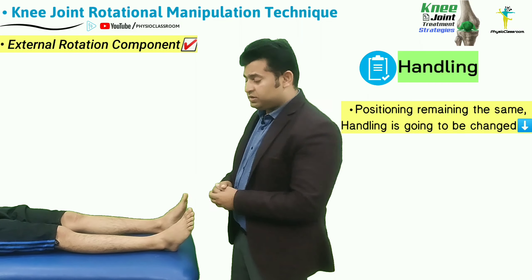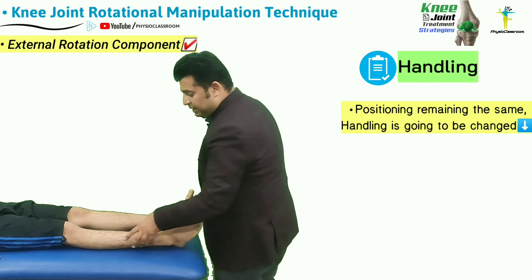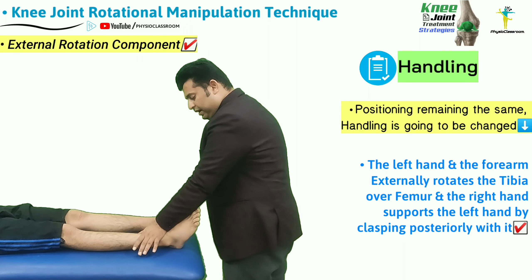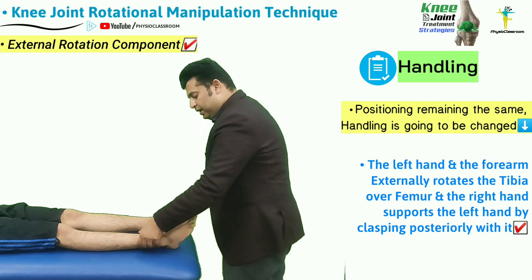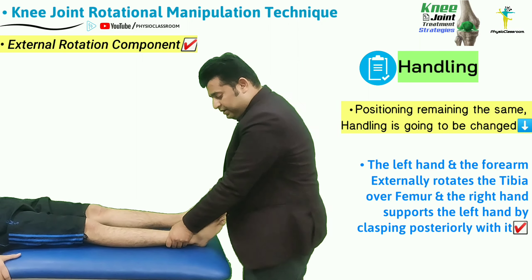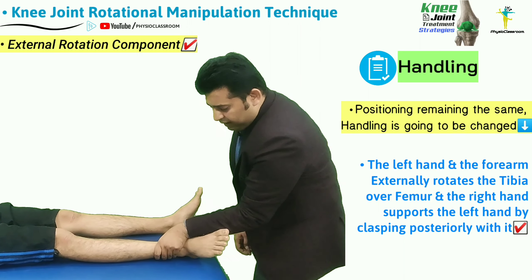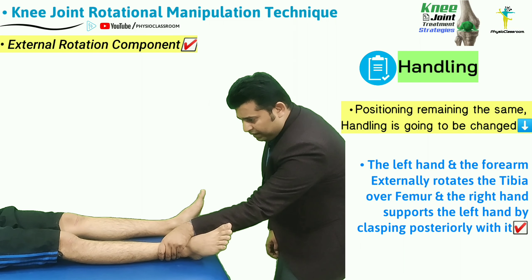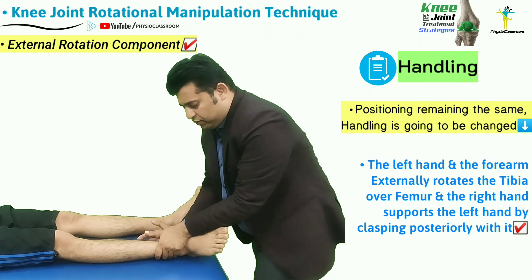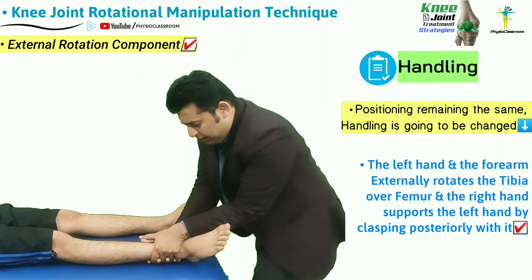To restore internal-to-external rotation joint play of the tibia, the left hand comes from the anterior side and holds the anterior lower portion of the patient's leg. The forearm comes from the medial side of the foot, with the hand and forearm acting as leverage to externally rotate the tibia. The right hand reinforces the left hand, with fingers clasped posteriorly.